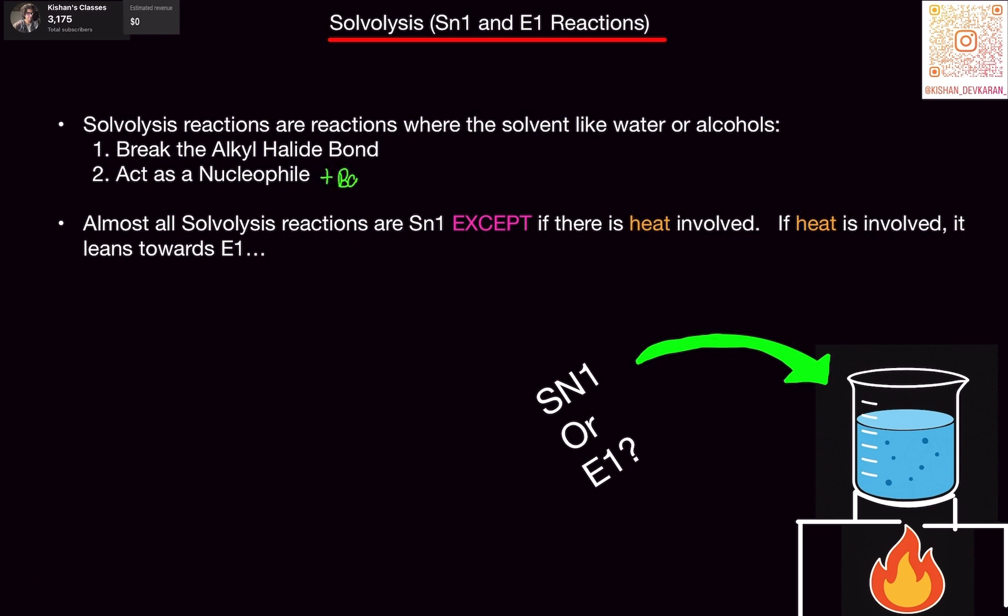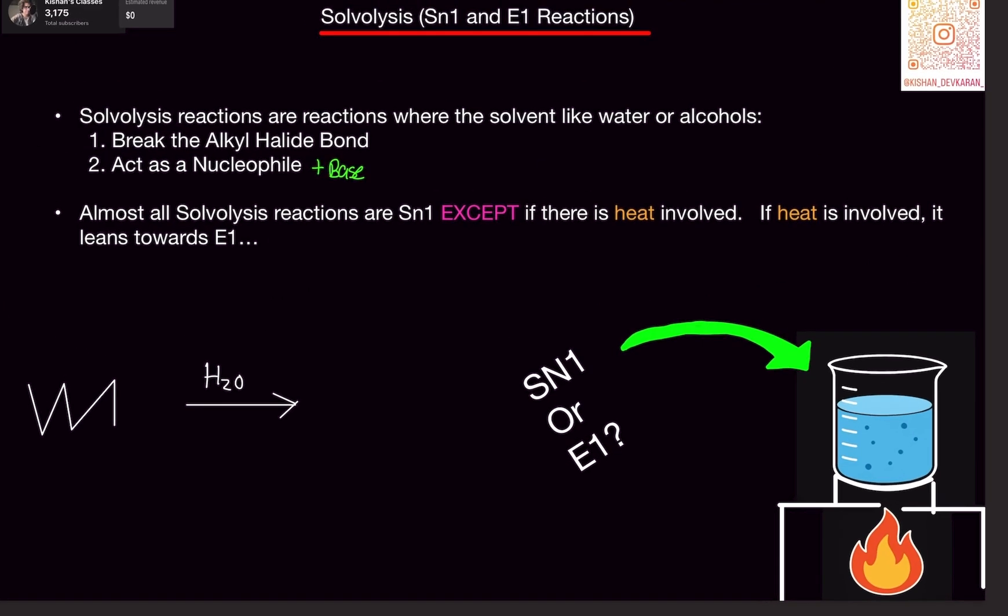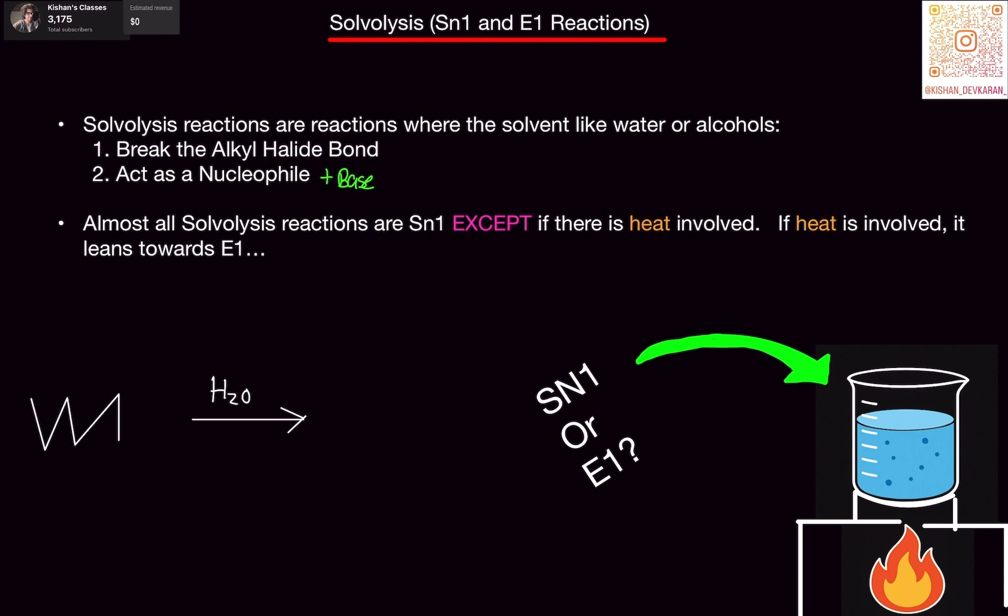Okay, so it is doing two things. Almost all solvolysis reactions are SN1 except if there is heat involved. If there is heat involved, you do E1. Let me give you an example. So say we have a reaction, and say we had some boring alkyl halide on the left, and I gave you a solvent, something like water. This would proceed as SN1. However, if I were just to put a magic triangle here, then it would become E1.